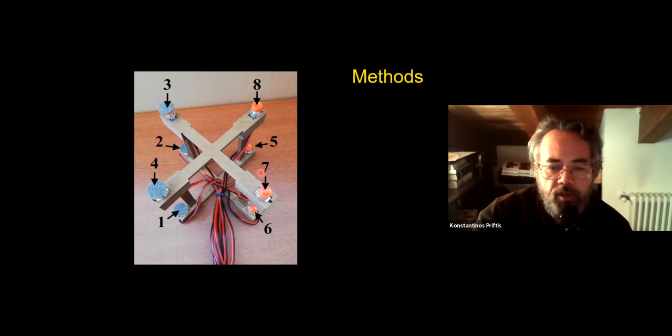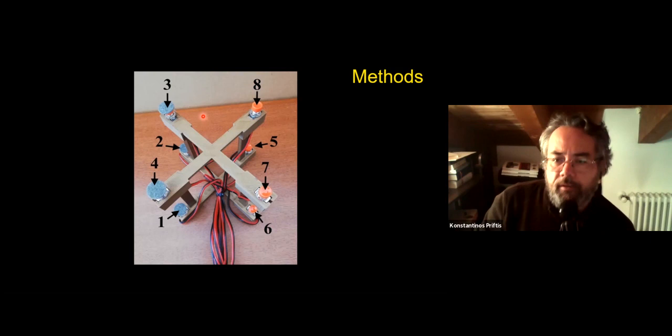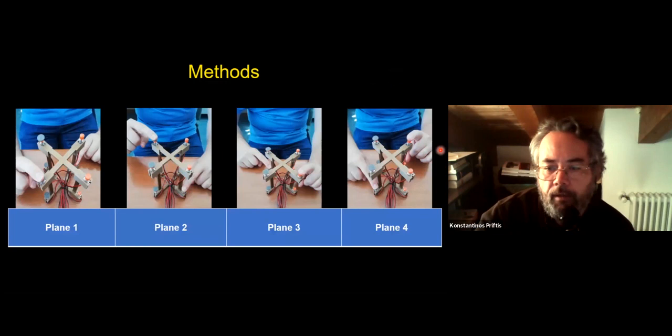Please imagine virtually connecting these buttons — you have a virtual cube. Buttons can be either on the left or on the right, on the upper or lower part of space, and simultaneously near or far away from the participant. By combining simultaneously the three Cartesian axes — the sagittal, vertical, and horizontal — we created four planes.